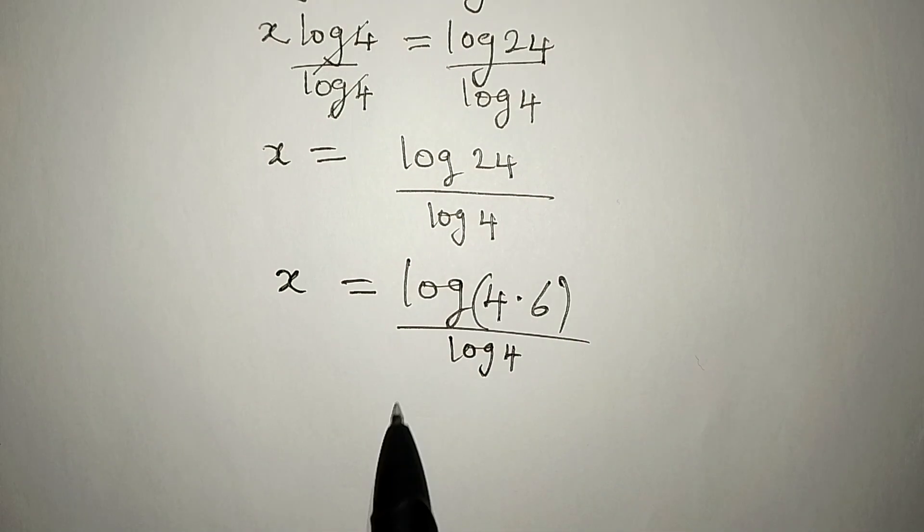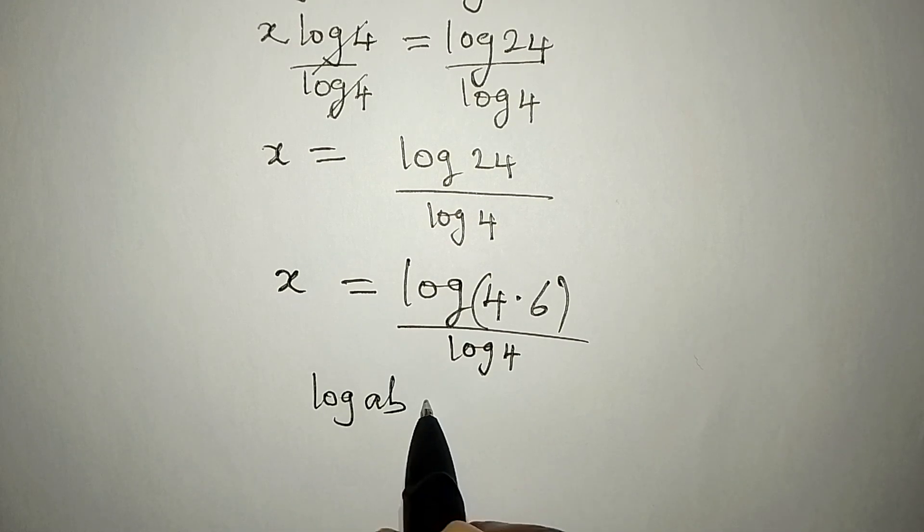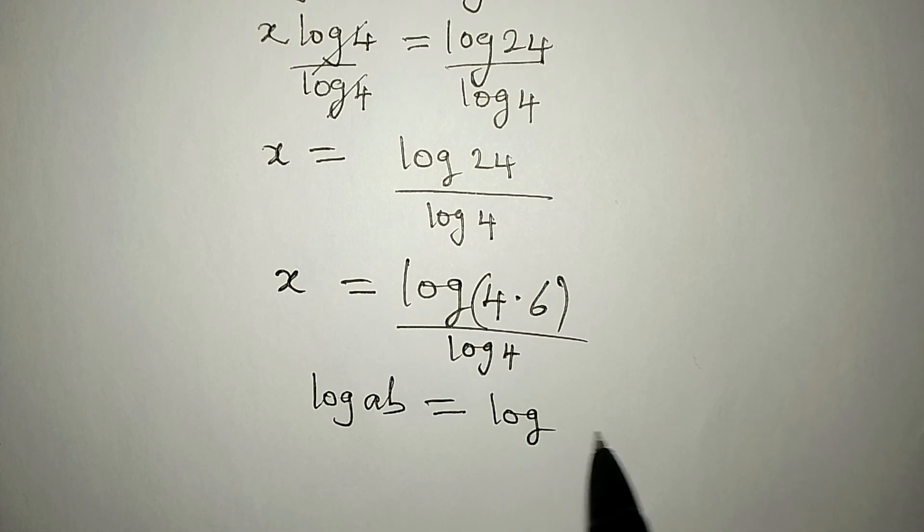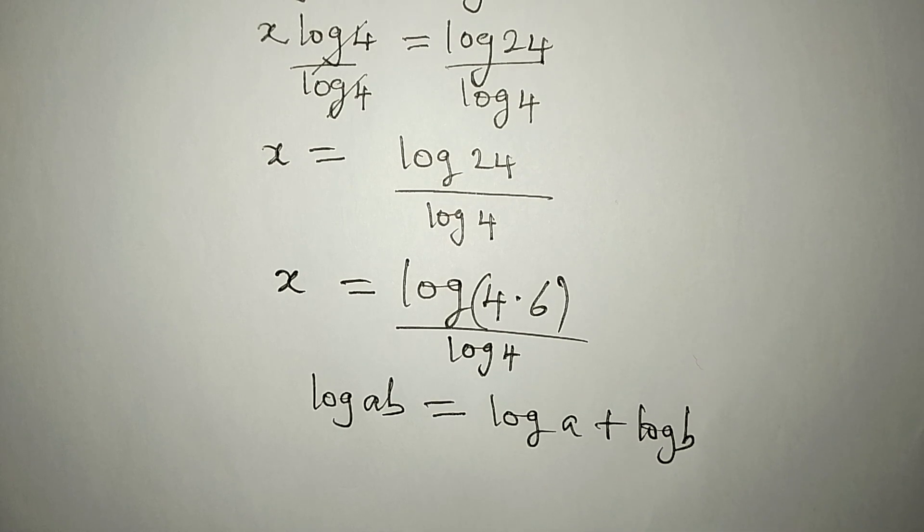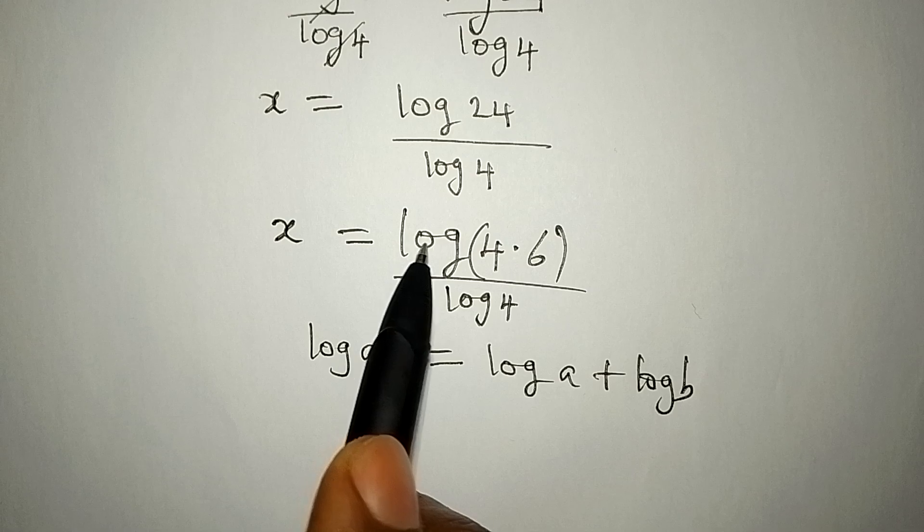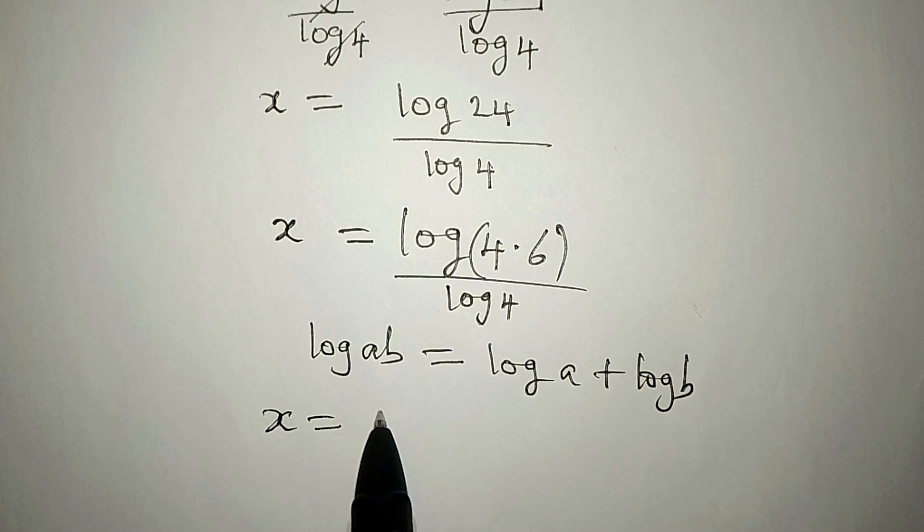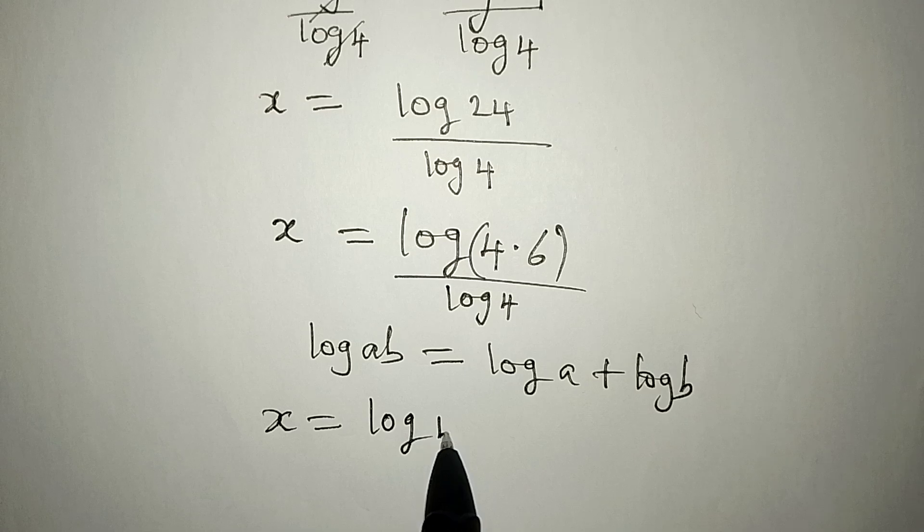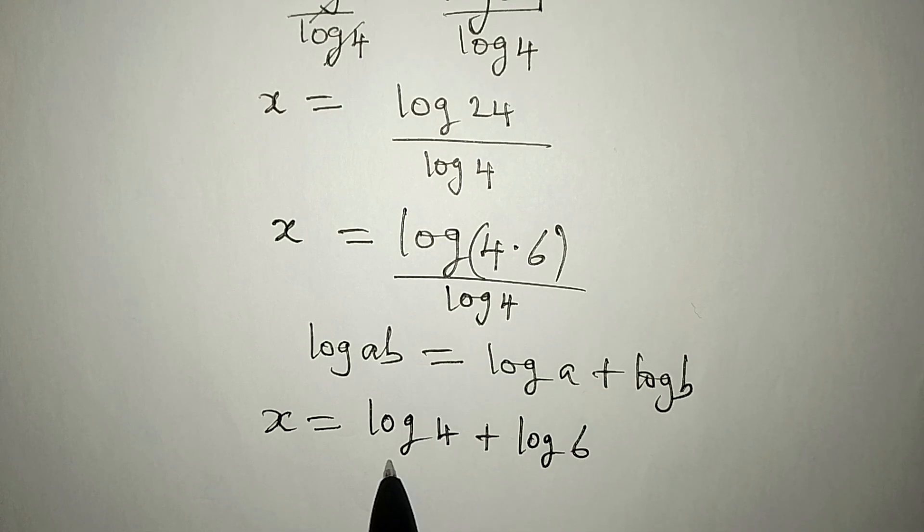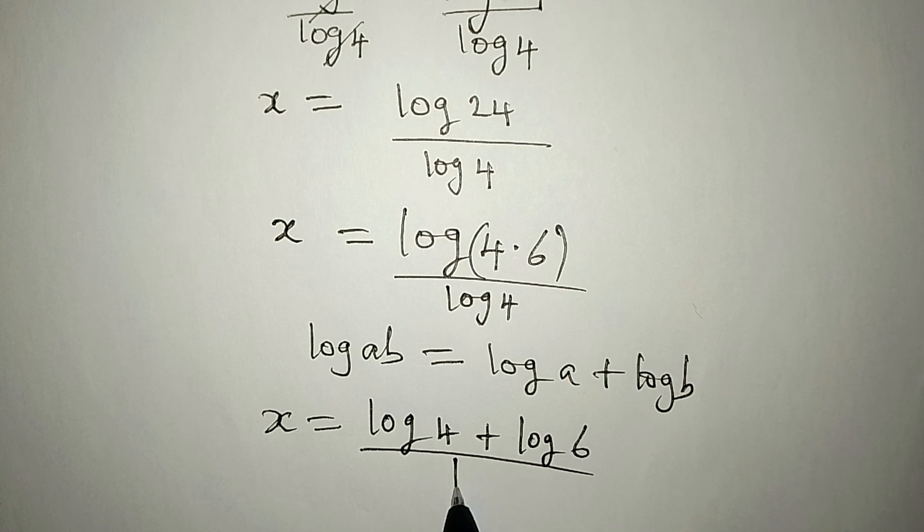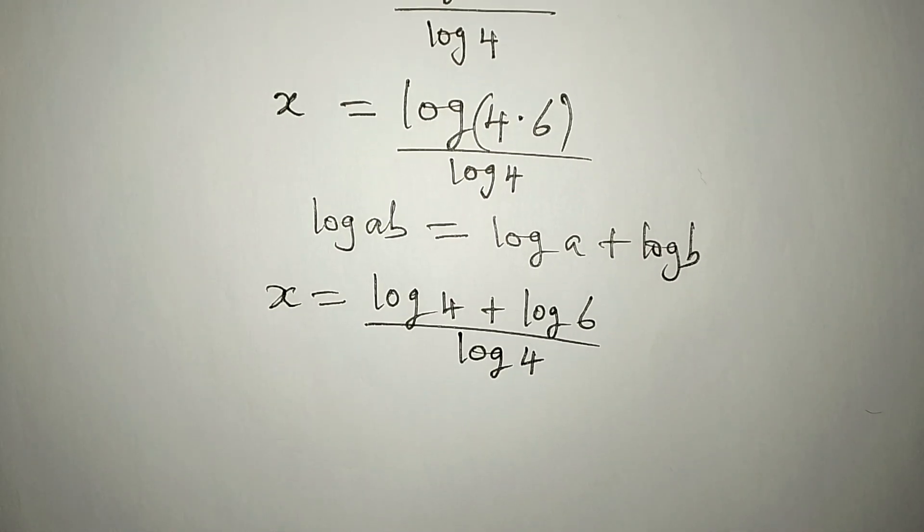This is because if you have log AB, it is equal to log A plus log B. So, that means I'm going to split what I have there so that x will be equal to log 4 plus log 6. And this is all over log 4.